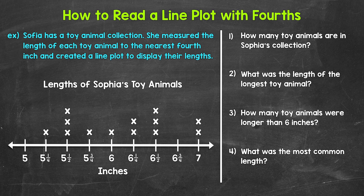Let's jump into our first example where we have a line plot, and then we have four questions to see if we can read and understand the line plot. For our example, it says Sophia has a toy animal collection. She measured the length of each toy animal to the nearest fourth inch and created a line plot to display their lengths. Now looking at the line plot, we have a title up top that tells us what the line plot is about — lengths of Sophia's toy animals.